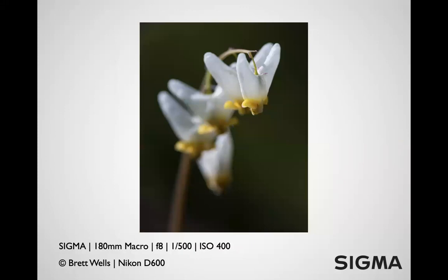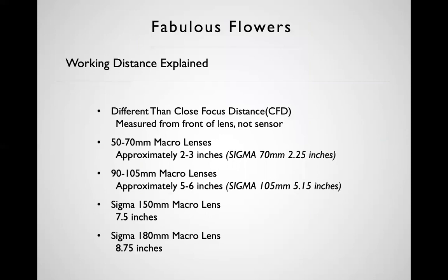This is a flower called Dutchman's britches. In the Great Smoky Mountains there are three plants almost indistinguishable until they bloom — Dutchman's britches, squirrel corn, and bleeding hearts — distinguished mainly by the top portions of the flowers. This is shot at f8 because I wanted very limited depth of field: just that front flower in focus, with the others falling off as they went back.